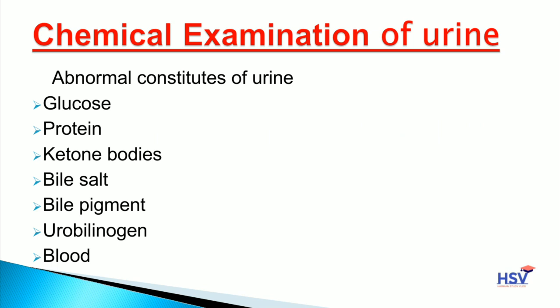bile pigment, urobilinogen, and blood. These are the abnormal constituents of urine. Normal urine में जो abnormal constituents होते हैं वो normally excrete नहीं होते, लेकिन अगर ये urine में आ रहे हैं तो इसका मतलब आपको कोई problem है या फिर आपकी kidney damage हो रही है। इन constituents को urine में check करने के लिए हम chemical examination करते हैं।